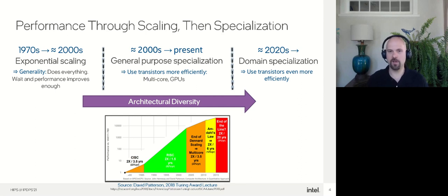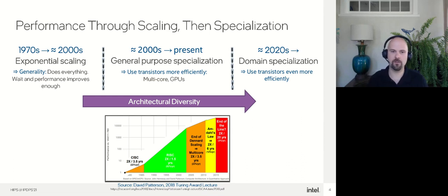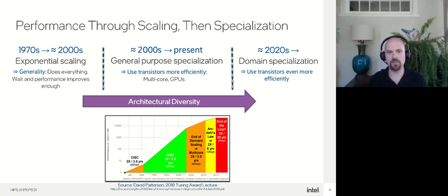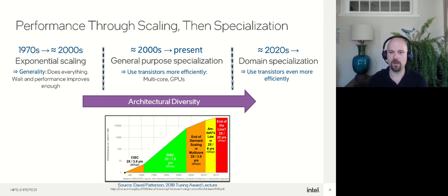Let me start with something that's not news to almost any of you, but I think it's important to set the stage for why we're talking about OneAPI today. In the earlier days — the 1970s onward — of integrated circuits, chips were really dominated by exponential scaling, meaning that if you waited, the next process generation or architecture would see significant performance gains. That led to a real focus on generality, so a single architecture could do everything. There was a lot of history with CISC and RISC architectures because it was possible to have very general architectures.